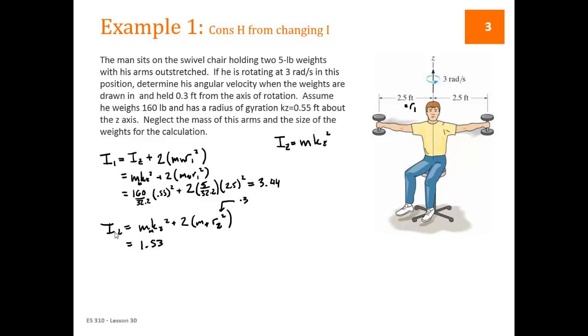Now after he pulls those in, we still have the same expression except R2 is going to be 0.3. So I2 is going to be the same thing, M man, Kz squared, plus two times M weight, R2 squared. R2 is 0.3, so we plug in numbers and we get 1.53.